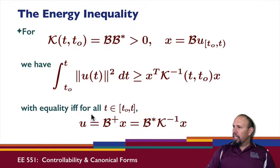With equality, if and only if, for all T in this interval, U is given by this expression. This is basically the pseudo-inverse of our control map operated on by X. Notice this is actually a state feedback signal.